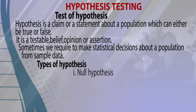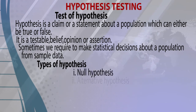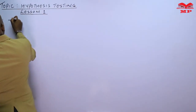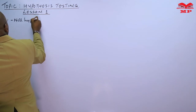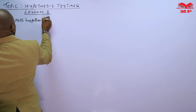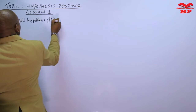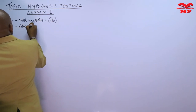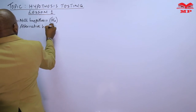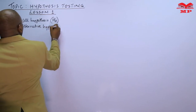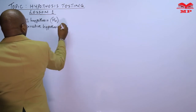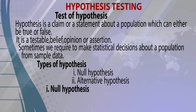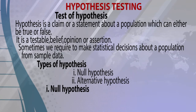There are two types of hypothesis: the null hypothesis and the alternative hypothesis. The null hypothesis is denoted by H₀ or H-naught, and the alternative hypothesis is denoted as H₁.